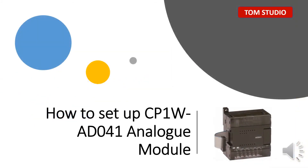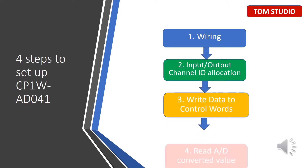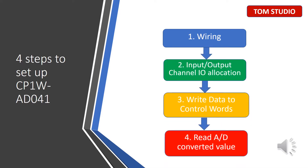In this training tutorial, I am going to talk about how to set up the CP1W-AD041 Analog Module on a Micro PLC. There are 4 steps to set up this module: Step 1, Wiring. Step 2, Input and Output Channel I/O Allocation. Step 3, Write Data to Control Words. Step 4, Read Analog Converted Value from Certain Words.